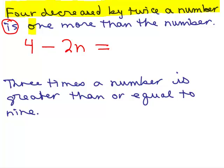Now we've got the right-hand side, one more than the number. One more than something means I'm adding one to something. What am I adding it to? Whatever that number is. Same number, n. So I've got four minus 2n equals n plus one. So all we're doing is translating. We're not worrying about what n is.